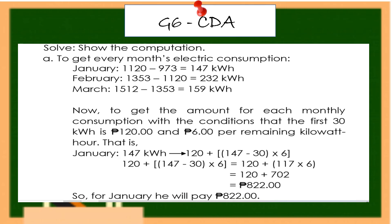For January with 147 kilowatt-hours: 120 + (147 − 30) × 6 = 120 + 117 × 6 = 120 + 702 = 822 pesos. So Jose will pay 822 pesos for January.